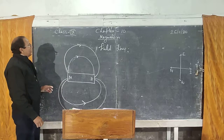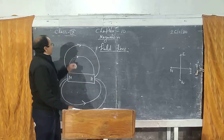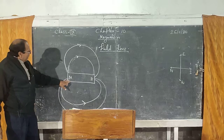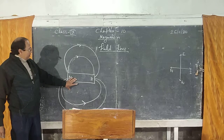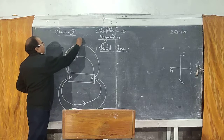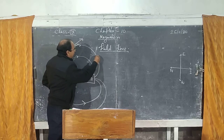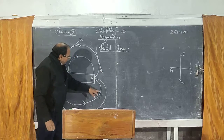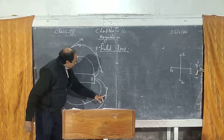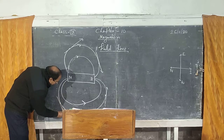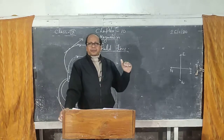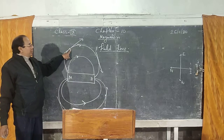The strength of the magnetic field depends on the distance from the magnet as well as the position of the point from the magnet. The direction of the magnetic field at any point is shown by the tangent drawn to the field line at that point. If you draw a tangent at any point on the field line, that gives the direction of the magnetic field at that point. Simply, the direction of the field is the tangent drawn at that point on the field lines.